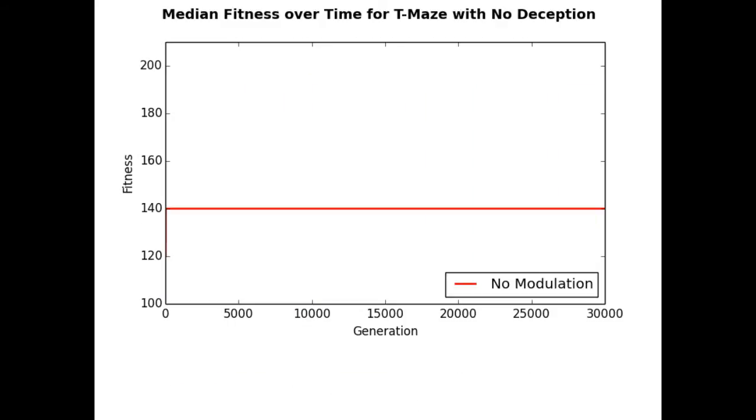Looking at the median fitness over time, we can compare these two treatments. We see that evolving networks with no neuromodulation struggle to solve this problem and stagnate at about 140.